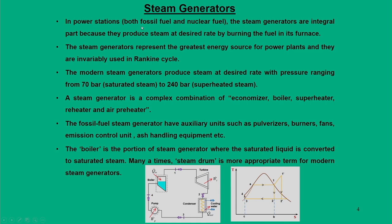In power stations that operate mainly on fossil fuel and nuclear fuel, the steam generator is an integral part because its main aim is to produce steam at a desired rate by burning the fuel in its furnace. Steam generators represent a greater source of energy for power plants and they invariably use the Rankine cycle. For most modern power plants, they operate close to 240 bar for superheated steam and 70 bar for saturated steam. The steam generator involves complex combinations of components, mainly heat exchangers: economizer, boiler, superheater, reheater, and air preheater.